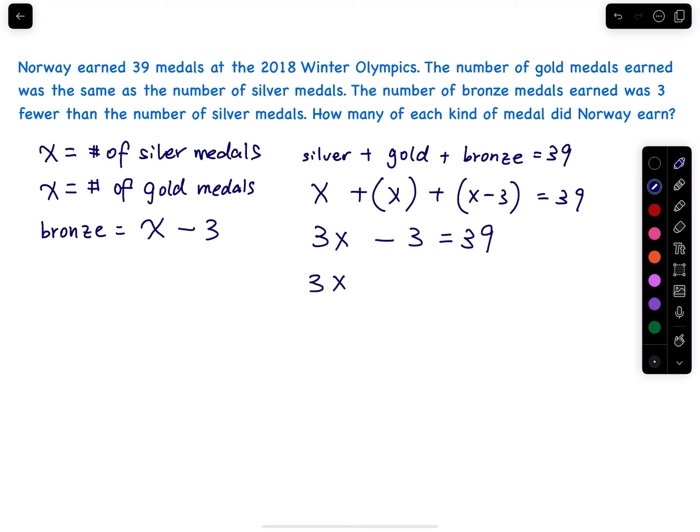So 3x, and then you add 3 to it. Minus 3 and then you add 3 on both sides. That equals 39 plus 3, which equals 42.